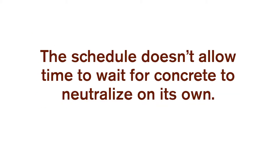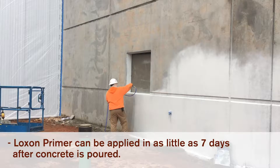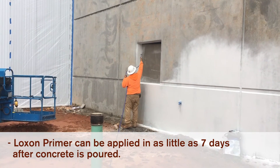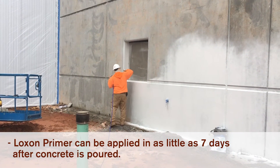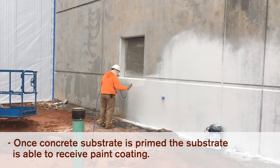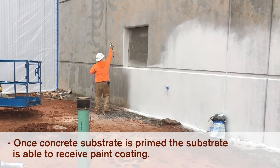What if the schedule doesn't allow time to wait for concrete to neutralize on its own? You can always prime. Loxon masonry primer is an acrylic primer engineered for resisting high alkalinity and can be applied to surfaces with a pH range from 6 to 13. It can be applied in as little as seven days after the concrete is poured. Once the concrete surface is primed, the substrate is able to receive a paint coating.